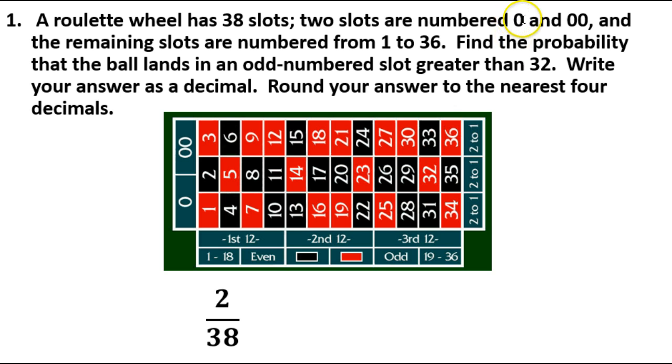The total number available spots are 38. It looks like they're 36, but we've got to remember there's a 0 and a 00. So 2 divided by 38, which is actually 1 divided by 19.